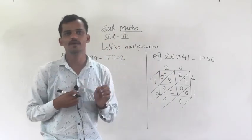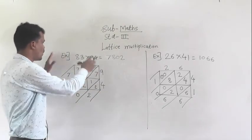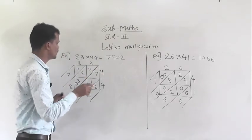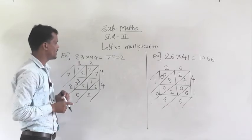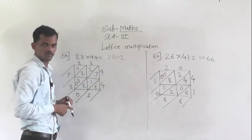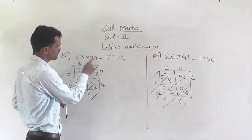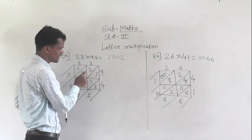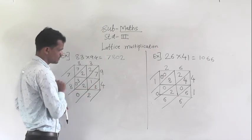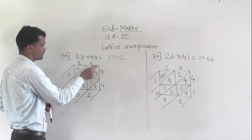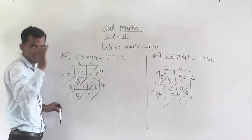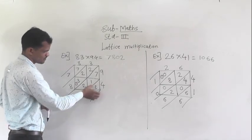Like this you have to solve examples. It is very simple — just understand how to draw the grid and how to multiply the numbers. For example, 83 multiply by 94. Write 83 here, then write 94 here. First multiply 3 into 9: 3 nines are 27, written here. Then 3 fours are 12. Then multiply 8 by 9: 8 nines are 72, and 8 fours are 32. Then add the numbers column wise.